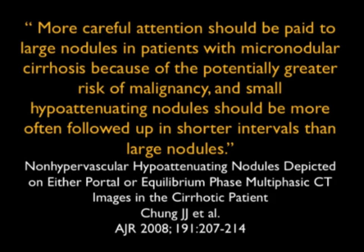An article by Chung made the point that more attention should be paid to large nodules in patients with micronodular cirrhosis because of the potential and greater risk of malignancy, and small hypoattenuation nodules should be followed routinely. Very tiny nodules have a smaller chance of being malignant, but it's still a challenge. Sometimes MR can be very helpful, and sometimes follow-up can be helpful.